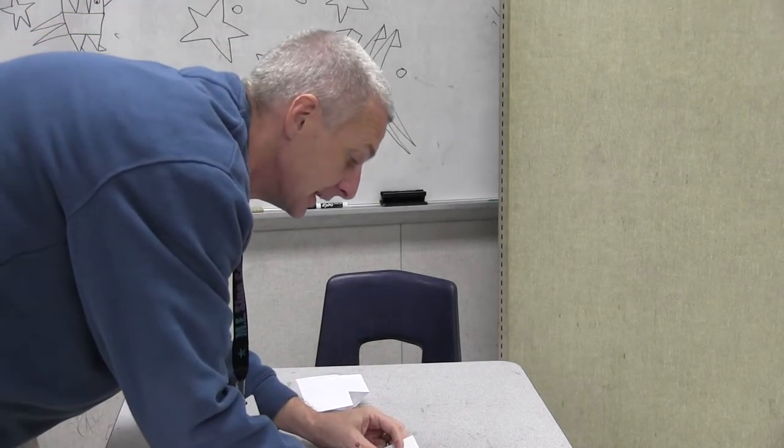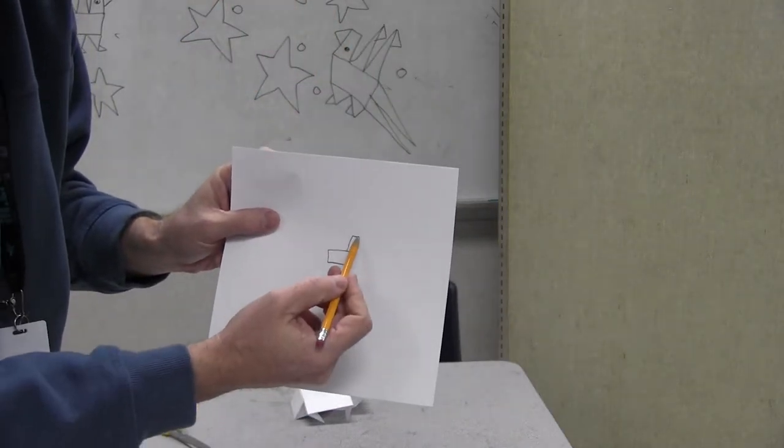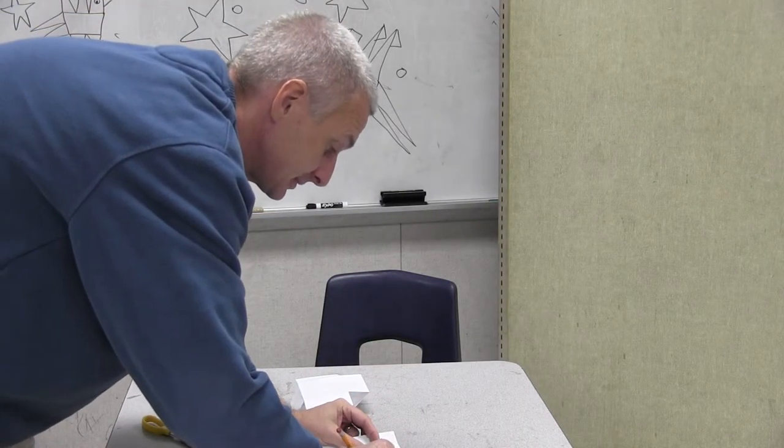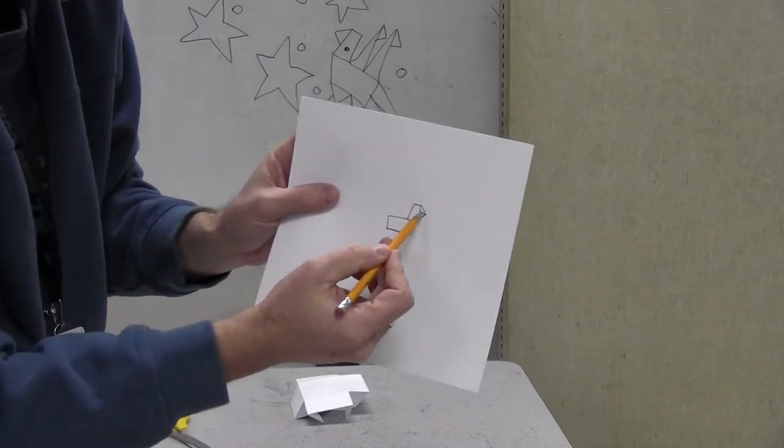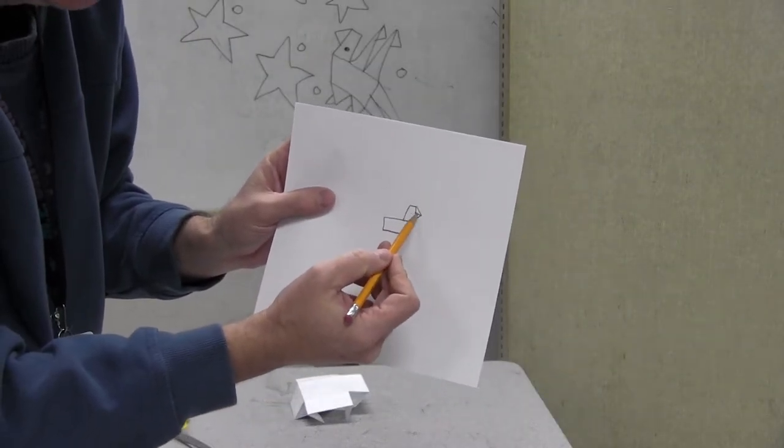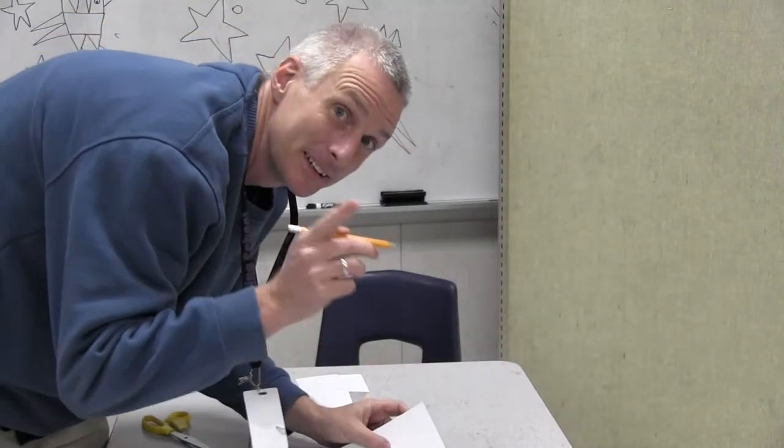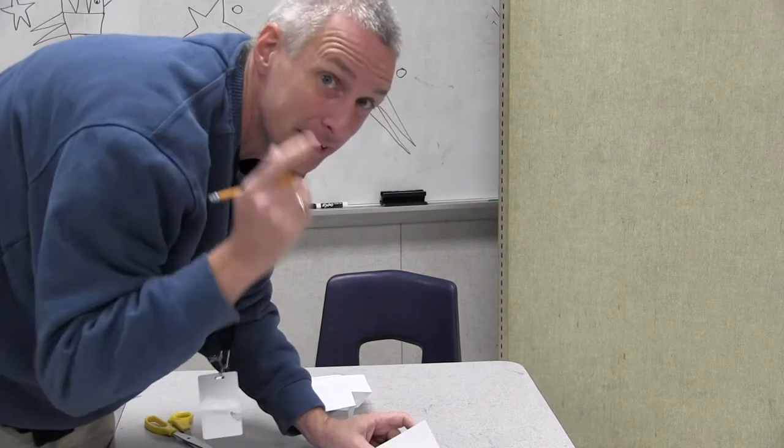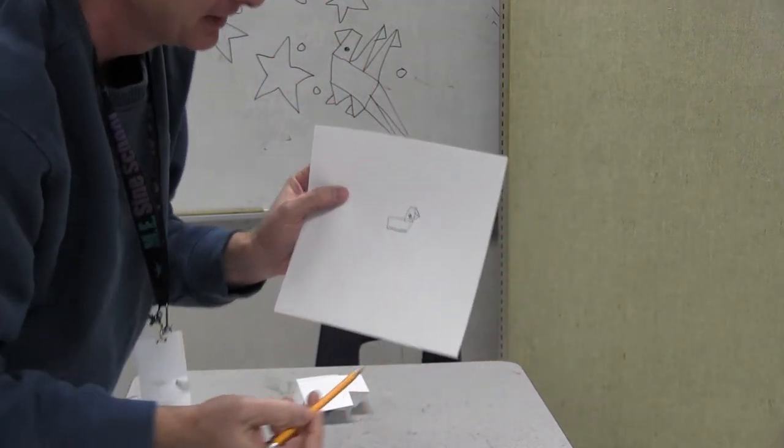That little bird beak is a triangle coming off of the neck. Split it down the middle—that's where he opens his mouth. Here's an interesting thing I like to do: put the eyeball a little lower than you think you have to, right here, down a little lower on the head.